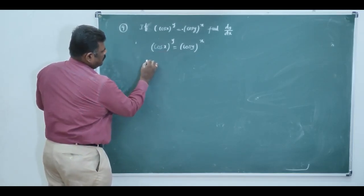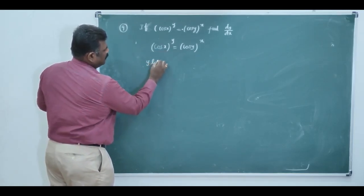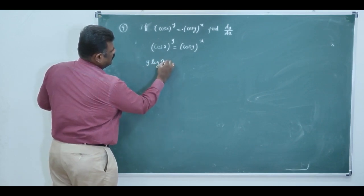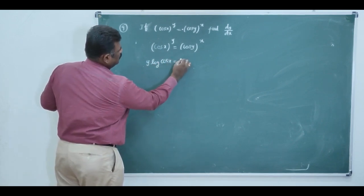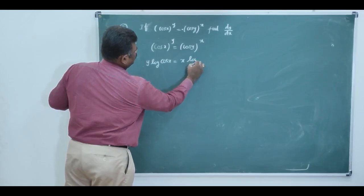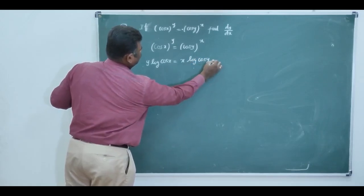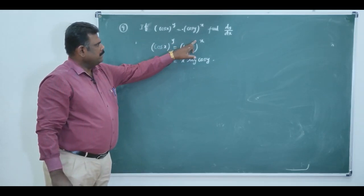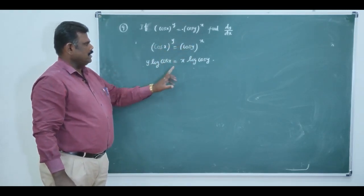On both sides, you take log, you are having y into log of cos x equal to x into log of cos y. So, power is a variable, you must use log.